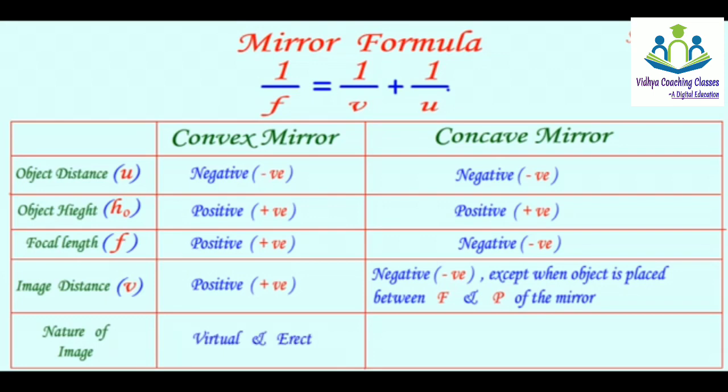And the last and most important fact is, what would be the nature of the image. In case of convex mirror, the nature of the image would be virtual and erect. And in case of concave mirror, the nature of the image would be real and inverted, except when the object is placed between focal length and pole of the mirror.